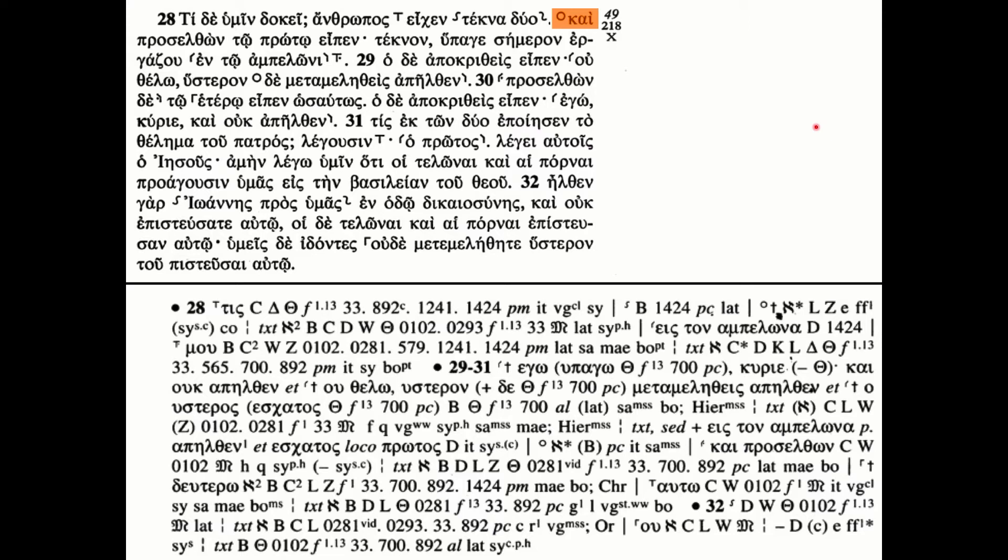If you look in the upper right hand corner you see that circle before the word chi which means 'and'. What that is indicating is that if you go down to the apparatus it's going to show you in verse 28 all the manuscripts that omit the word chi in their manuscript. So if you come down here there's that circle.